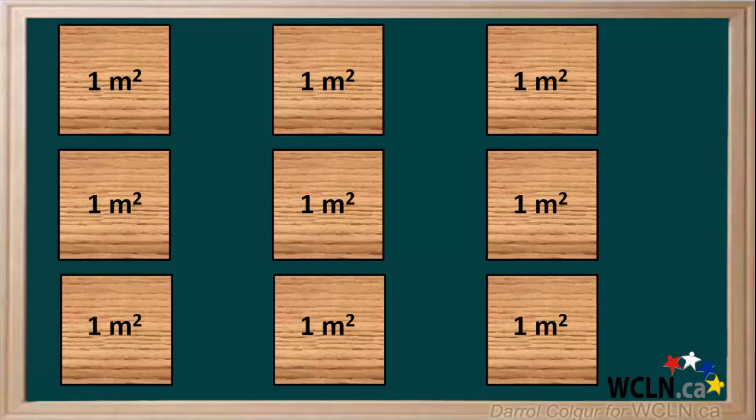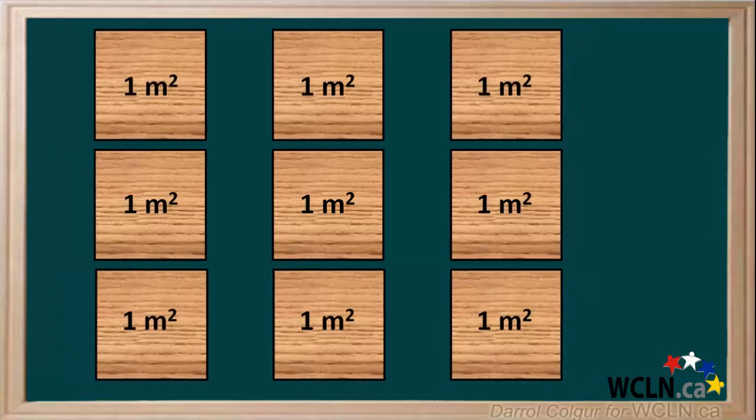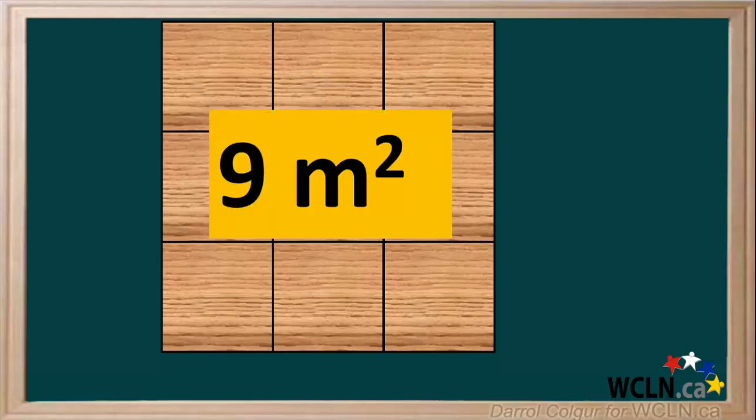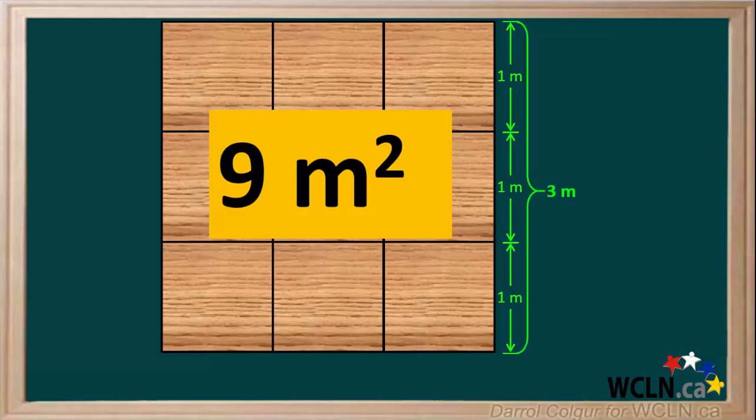When these 9 sheets are assembled into a deck surface, you can see that the total area is 9 square meters. Because each sheet has a length of 1 meter, we see that the total length of this side of the deck is 3 meters, and because the length of each sheet is 1 meter, the total length of this side of the deck is also 3 meters.